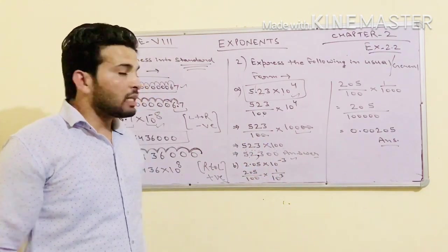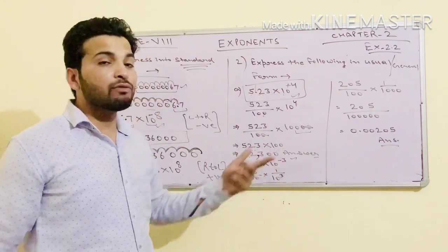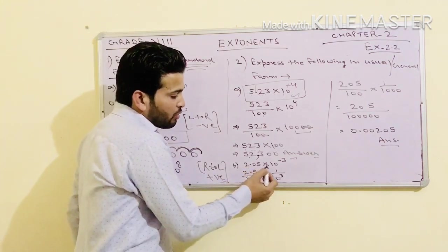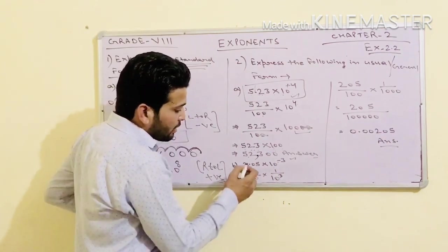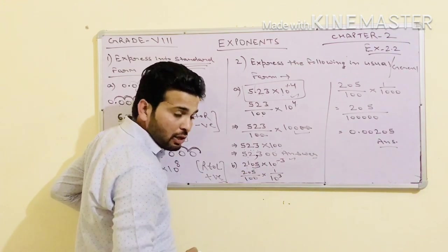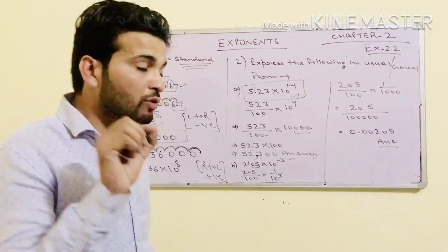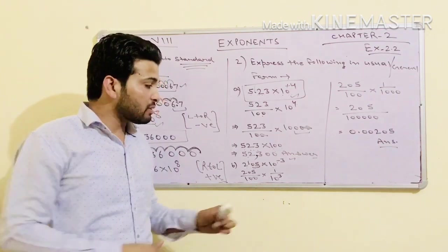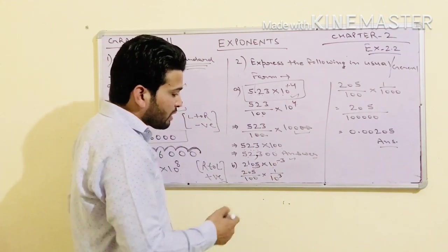That was the case when the power is positive. Now for the b-part when the power is negative: 2.05 × 10⁻³. Remove the decimal point — 2.05 becomes 205 upon 100. Then 10 raised to power minus 3 comes to the denominator and becomes positive 3, so it becomes 1 upon 10³, which is 1 upon 1000.